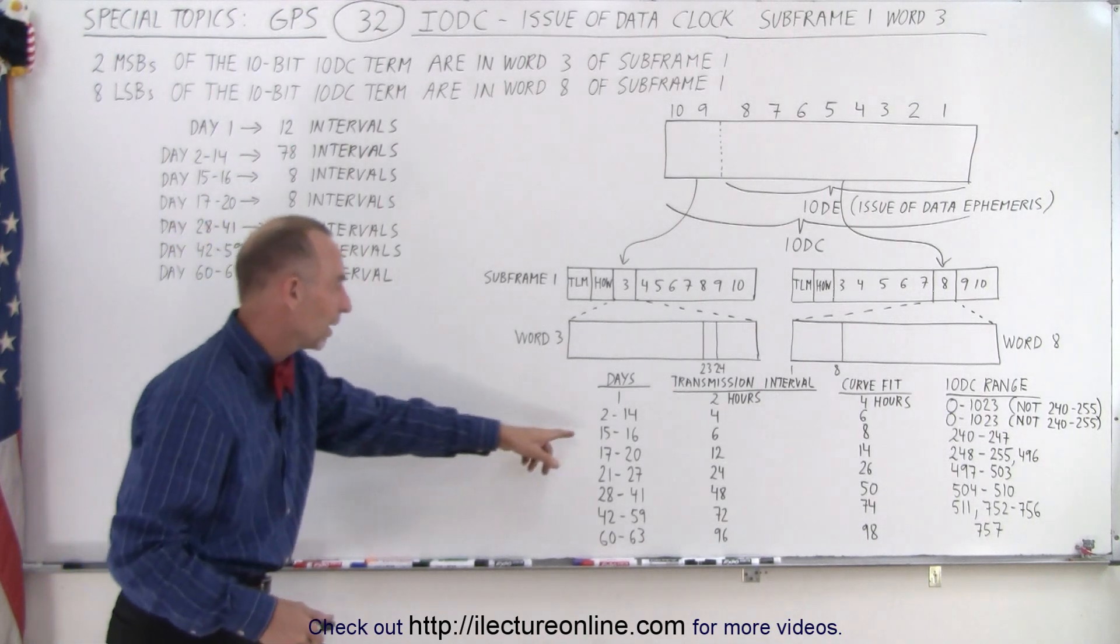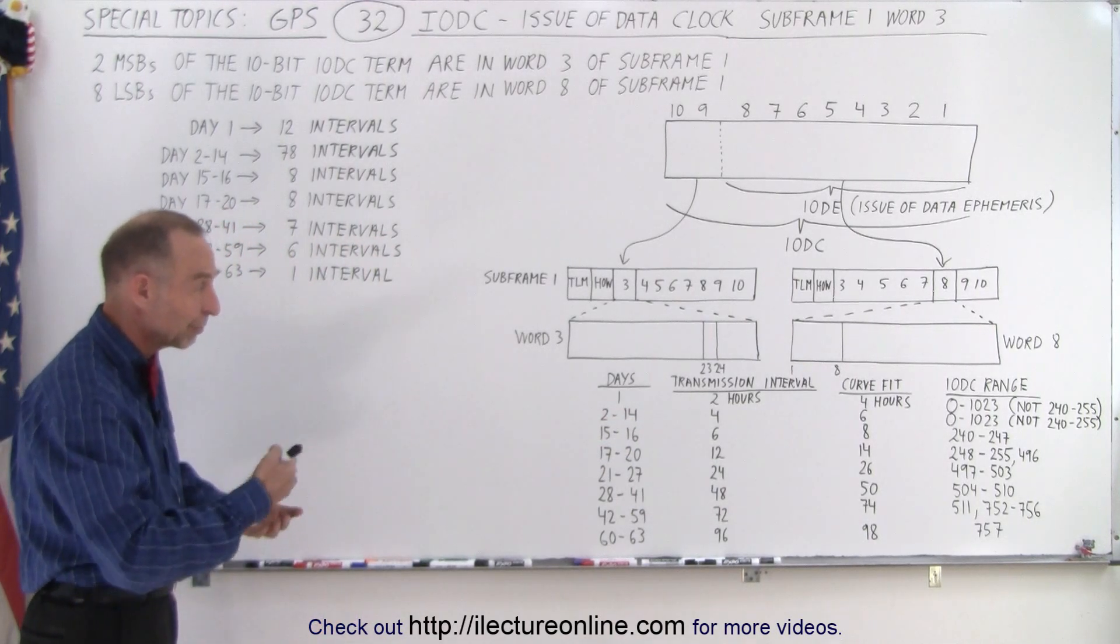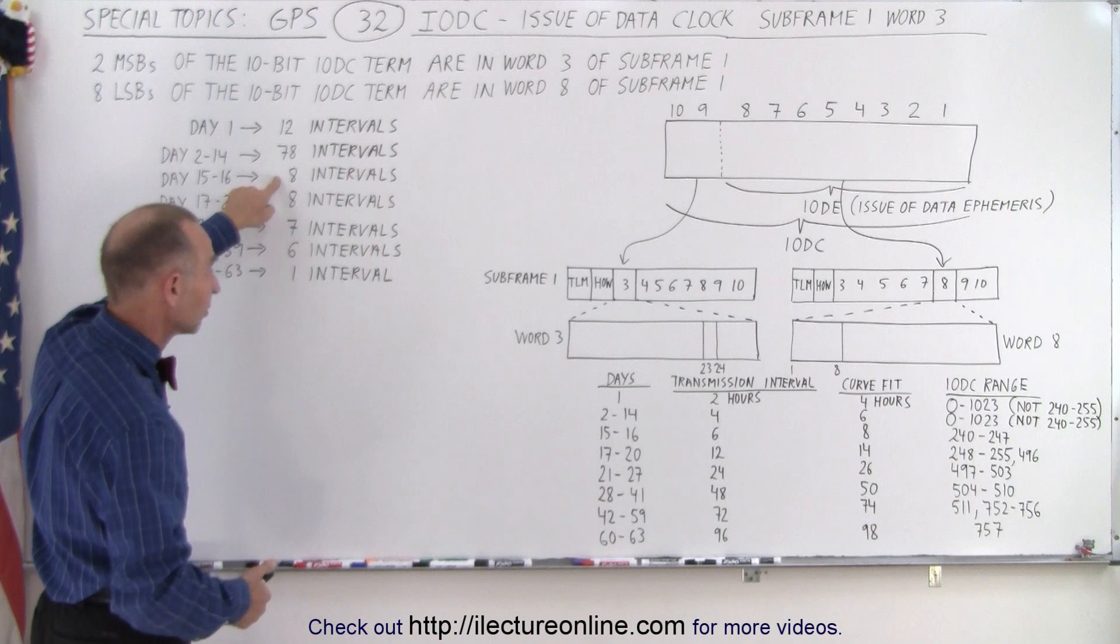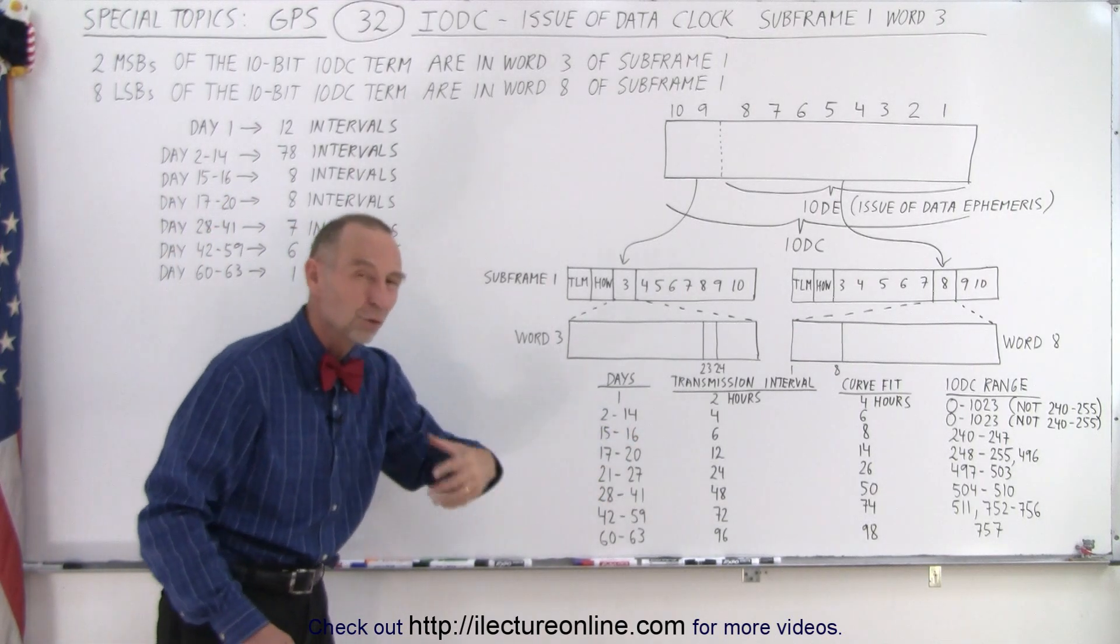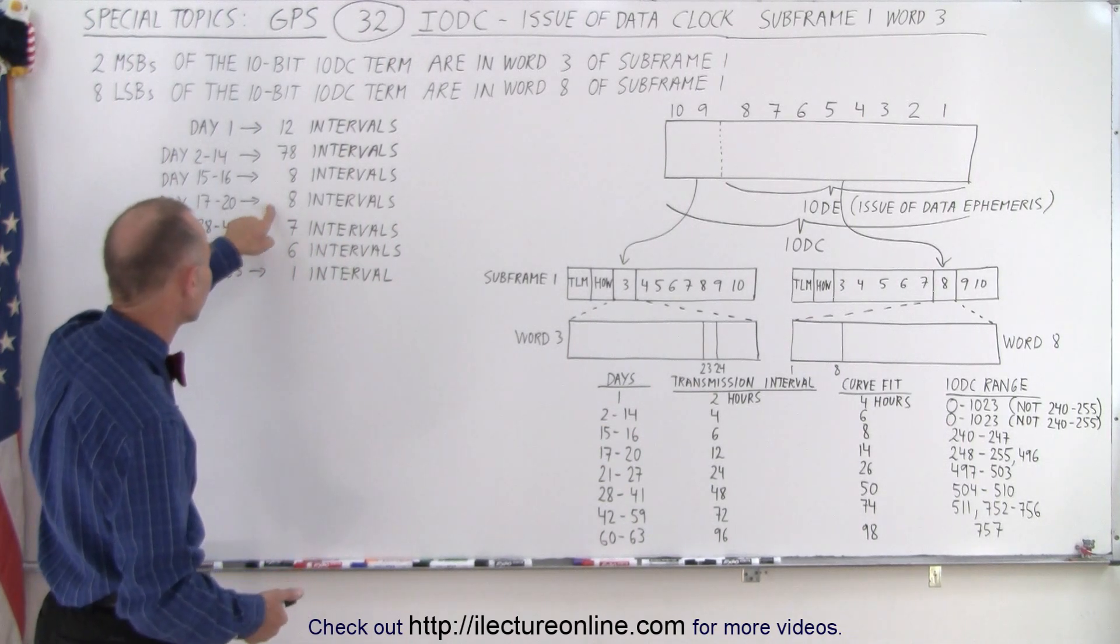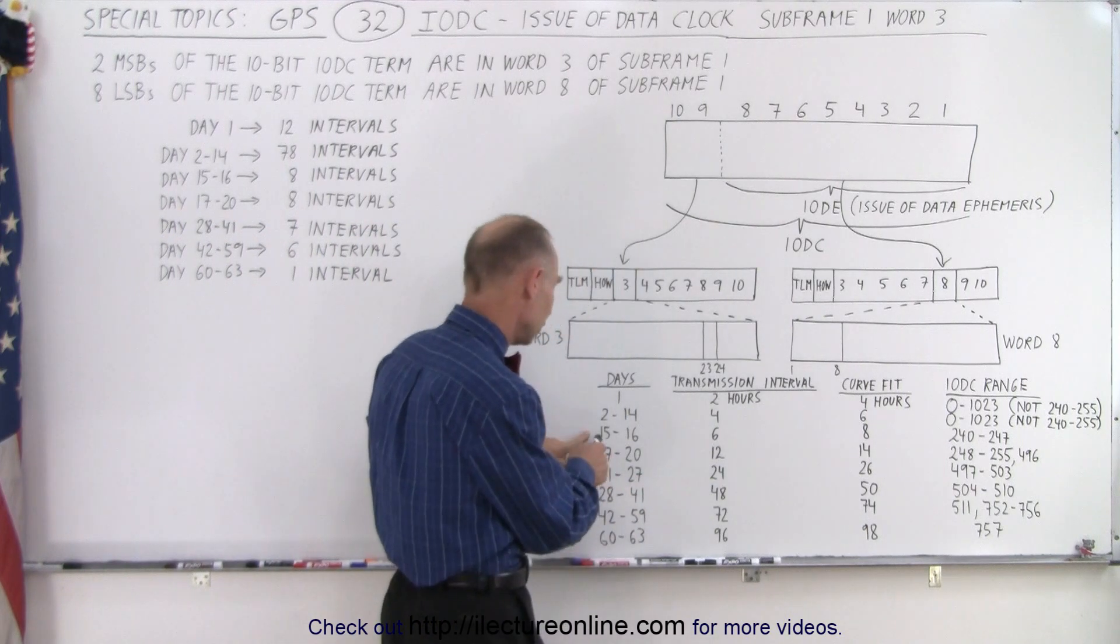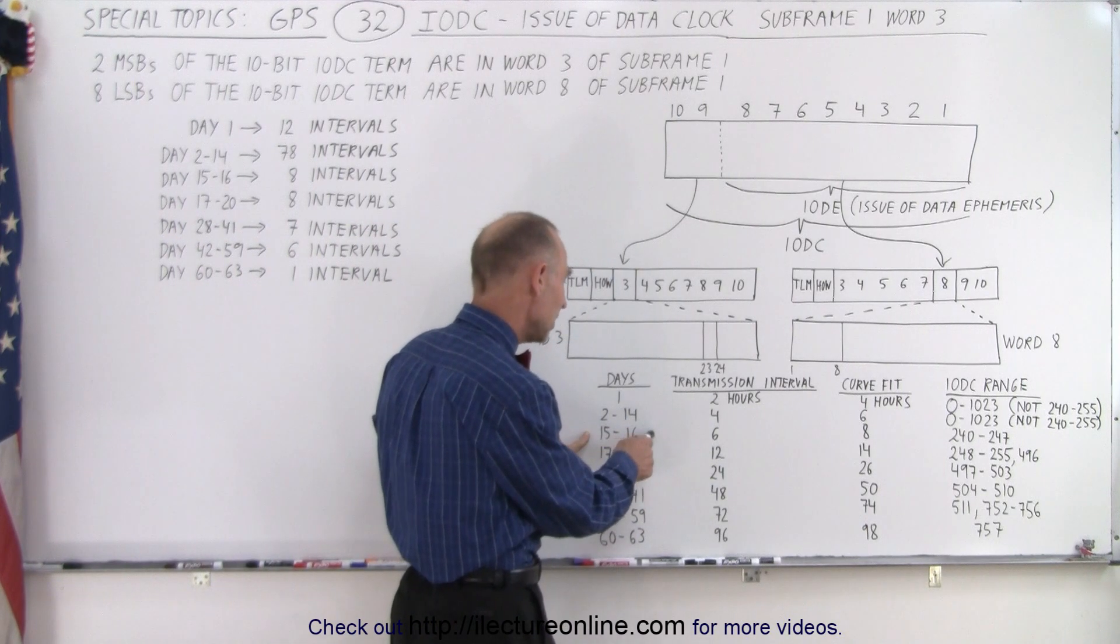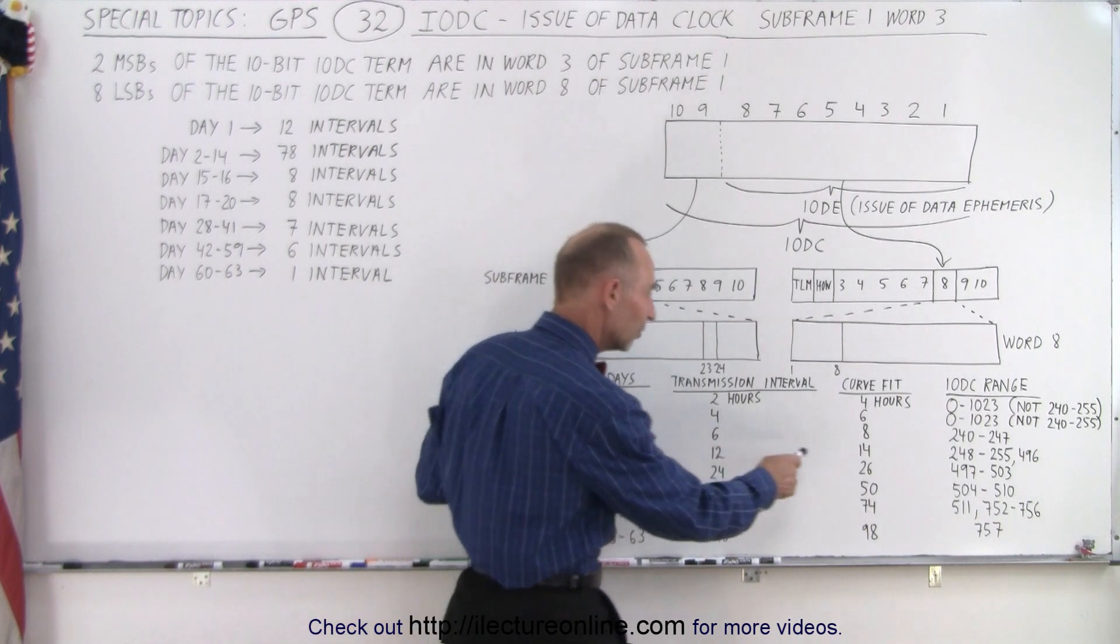Then for the next 2 days from 15 to 16, notice that now you have messages every 6 hours. That means 4 per day for 2 days, that gives you 8 intervals. And from 17 to 20, now you're going to have a new message every 12 hours. And so for 4 days, 12 hours, that's again 8 intervals. Notice that the restriction on the numbers are as follows. For the 15 to 16 day, when you have 6 hour intervals, so that would be a total of 8 intervals, you use numbers 240 to 247.